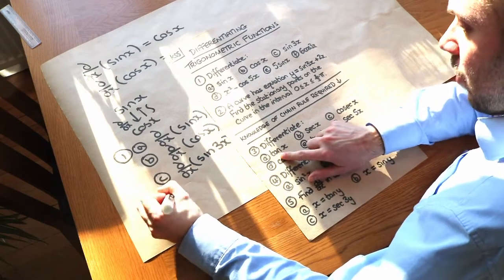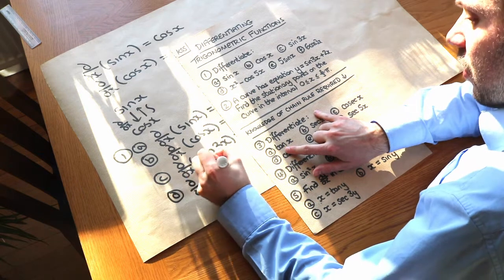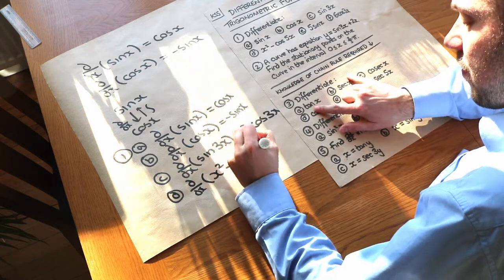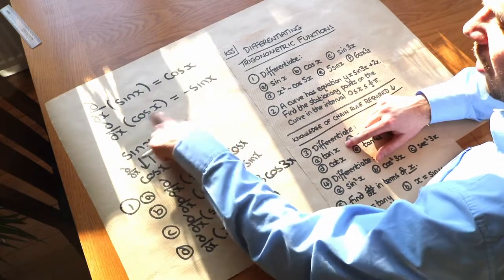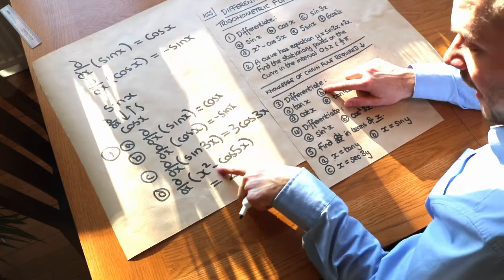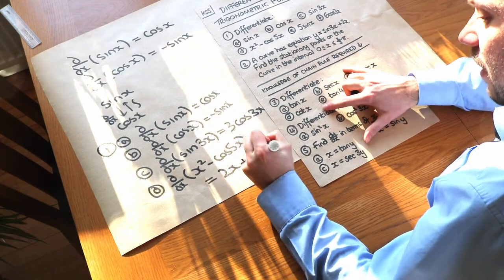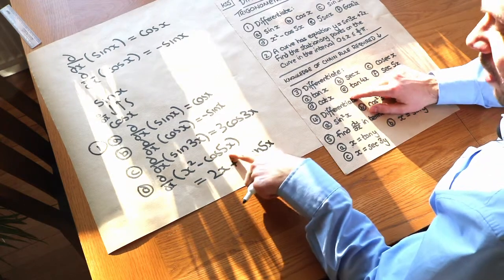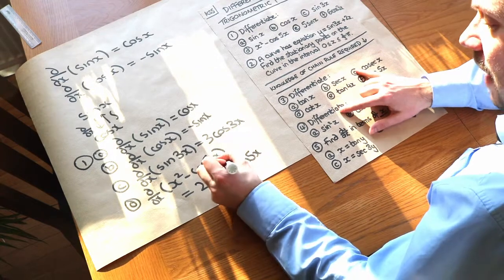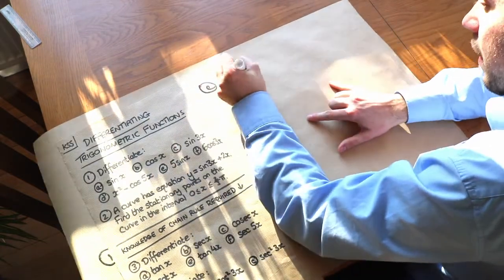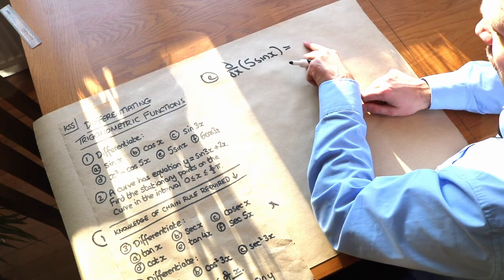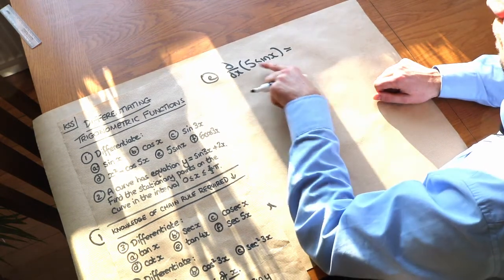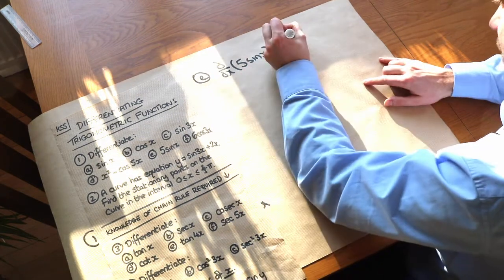When we differentiate x squared minus cos of 5x: x squared differentiates to 2x. Differentiating minus cos negates it to become positive, so the cos becomes sine of 5x, and because there's a 5 in front of x, we times by 5, giving positive 5 sine 5x. For 5 sine x, scaling an expression also scales its derivative, so 5 sine x differentiates to 5 cos of x.